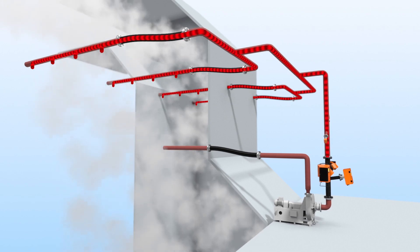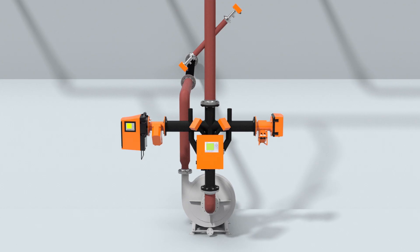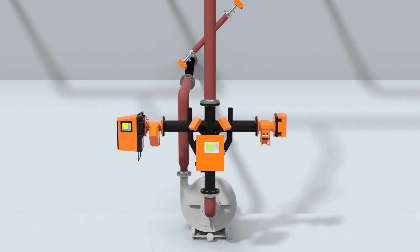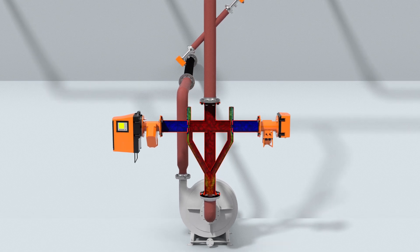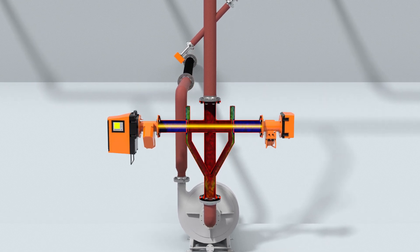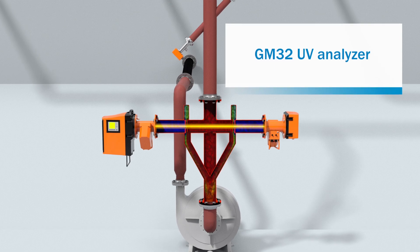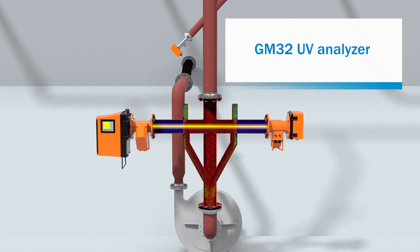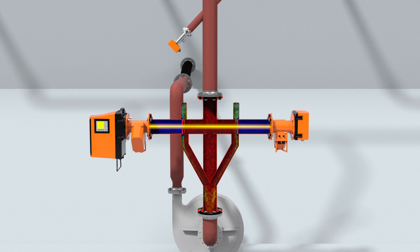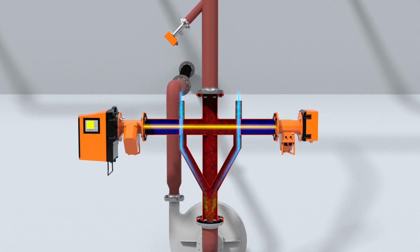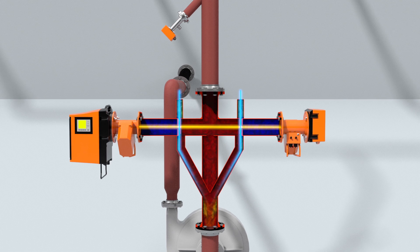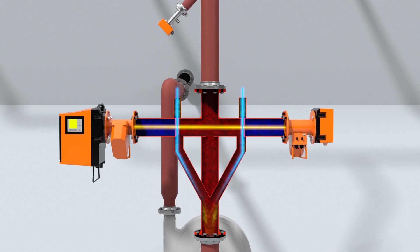Under optimum conditions, the sensors and analyzers take measurements using our specially developed bypass cell without distorting any of the results. The GM32 UV analyzer measures NOx content directly within the bypass cell, while the optics of the analyzer are cooled and maintained free of dust using purge air.